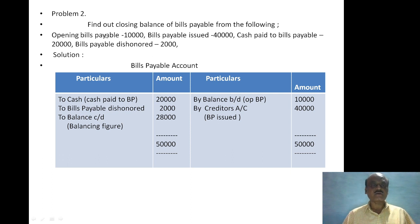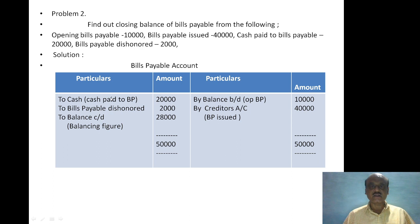The next part is to find out the closing balance of bills payable. Given: opening balance of bills payable rupees 10,000, bills payable issued to creditors rupees 40,000, cash paid against bills payable rupees 20,000, and bills payable dishonored rupees 2,000. We open the bills payable account with the opening balance brought down as rupees 10,000 on the credit side, cash paid rupees 20,000 and bills payable dishonored rupees 2,000 on the debit side, and then find the closing balance carried down.